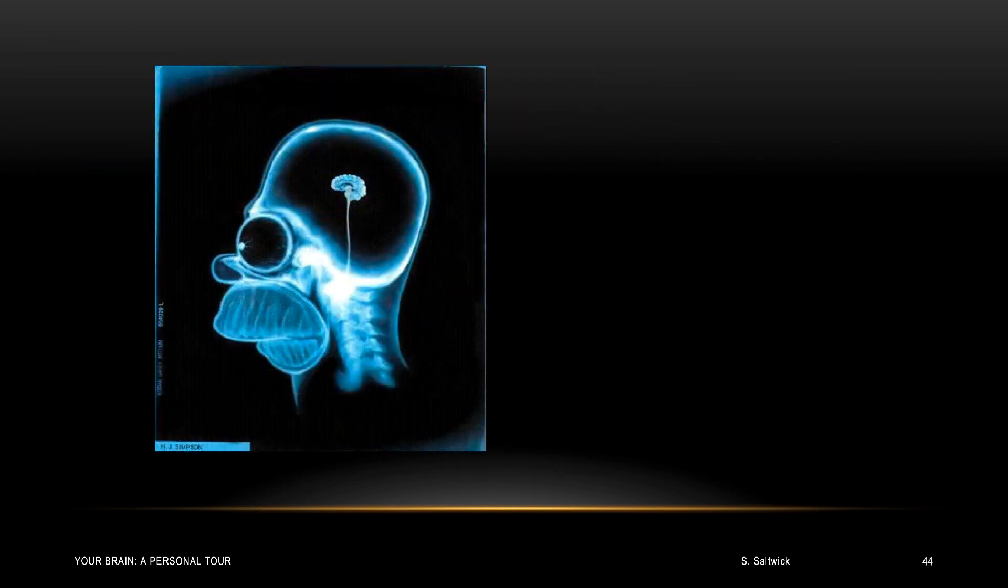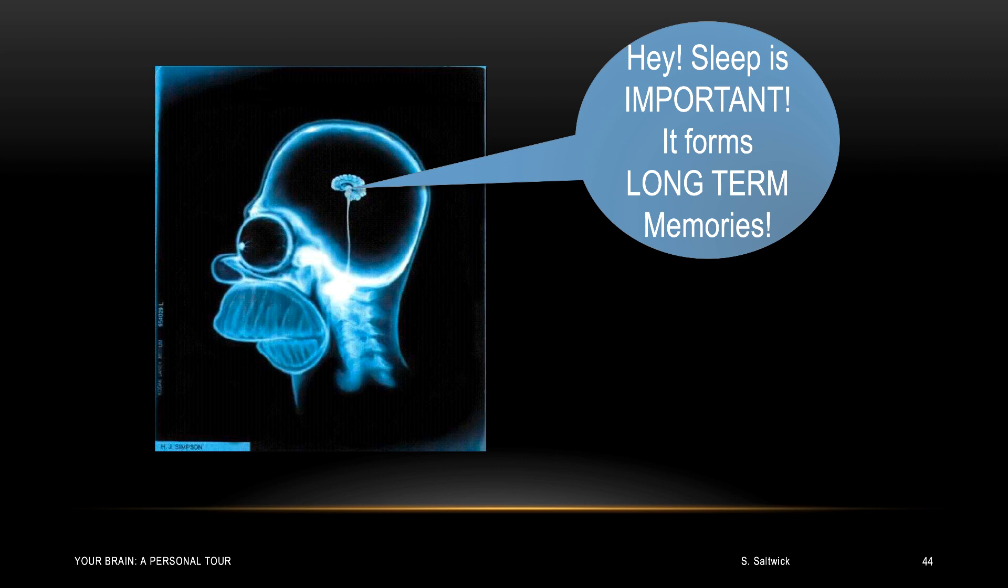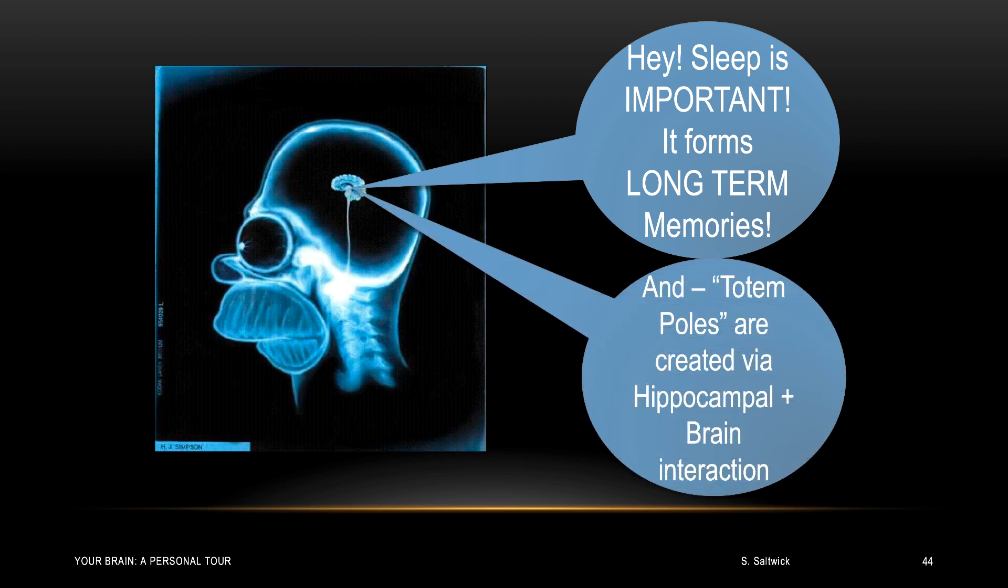So let's get to Homer's take. Homer is ecstatic. He says sleep is important as it forms long-term memories. Yay, sleep. As you know, Homer loves sleep. Now he's going to think that his sleep is justified by neuroscience. Homer has an additional point. The point is hippocampal plus cortex interactions create totem poles. It abstracts information. It creates insightful observations depending on the capabilities of the animal's brain. I think Homer has pretty well nailed it. These are the amazing properties of sleep and the formation of memories.